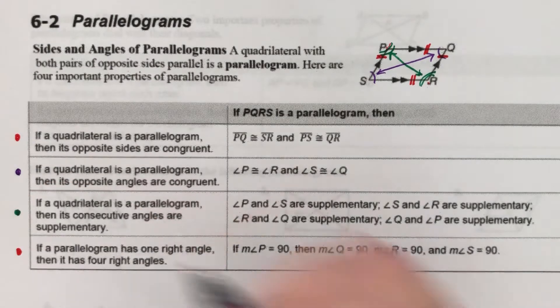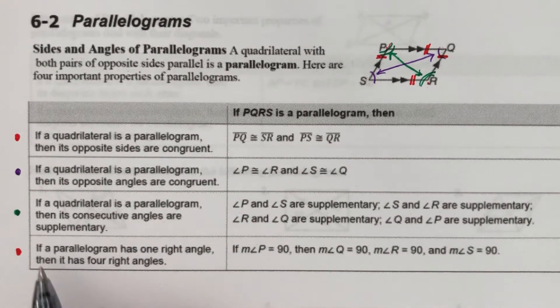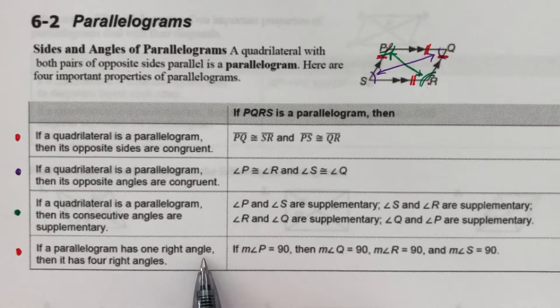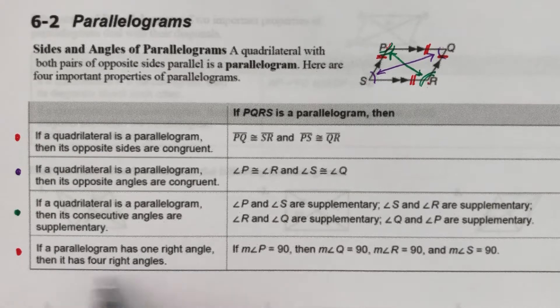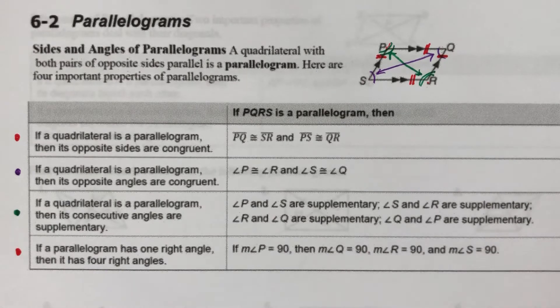And then last, if a quadrilateral is a parallelogram that has one right angle, if one of the angles is 90 degrees, then all four have to be 90 degrees. That's just a rule for a parallelogram.